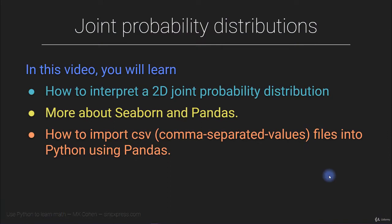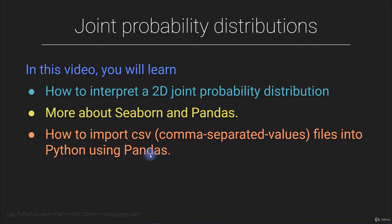So far in this section of the course, all of the probability distributions we've been creating were one-dimensional — based on one variable. In this video, you're going to see how to extend the probability distribution to two dimensions. This is called a joint probability distribution. Along the way, you'll also learn more about seaborn and pandas, including importing CSV data from disk into Python.